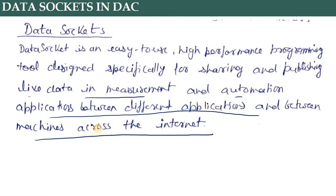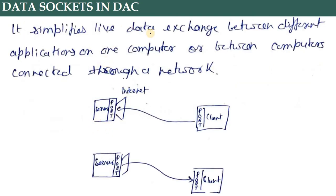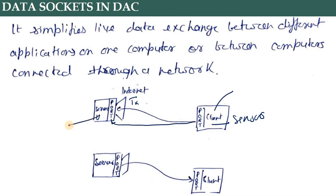Data sockets simplify live data exchange between different applications on one computer or between computers. Through a source of internet there is a server connected with a port, and connected through a transmission cable to the client — the client being the sensors. This is the simple architecture — a port connected with multiple ports and a server, so multiple clients and multiple servers are possible.